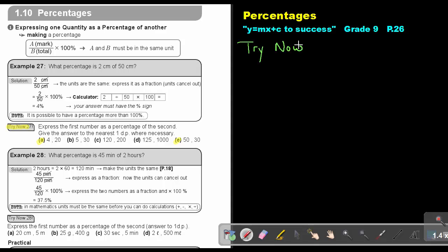Let's start. Try now 27. So if we start with the first one, number A. Express the first number as a percentage of the second, giving your answer to the nearest one decimal place where necessary. So it's 4 out of 20. So it's just 4, divide by 20, multiply 100% and that will give me an answer of 20%.